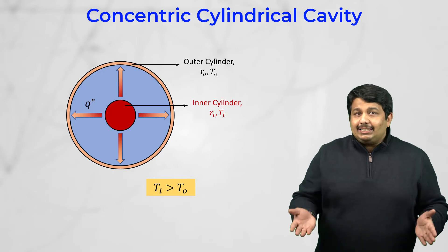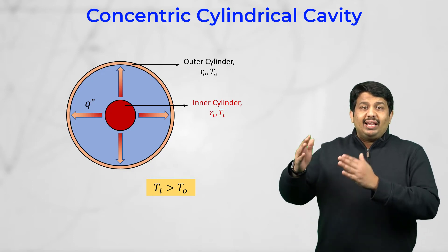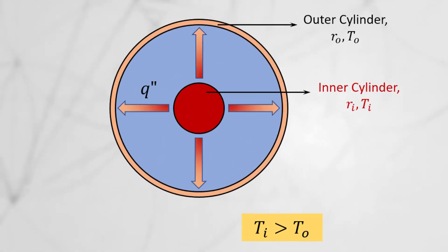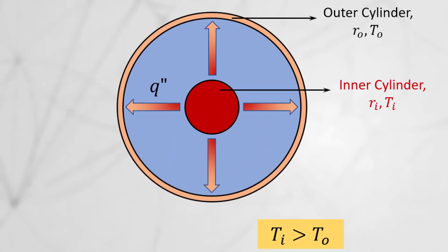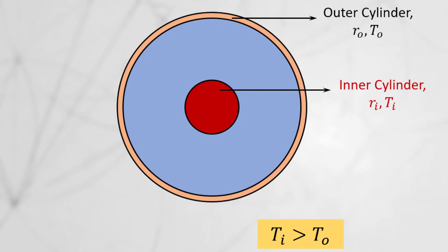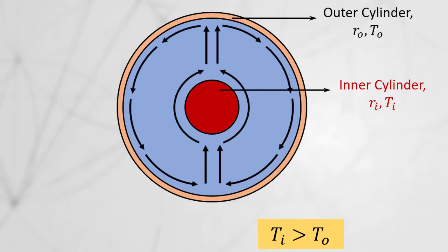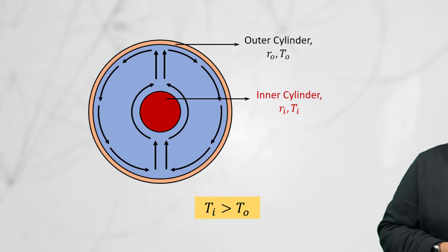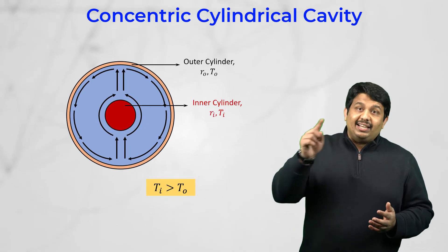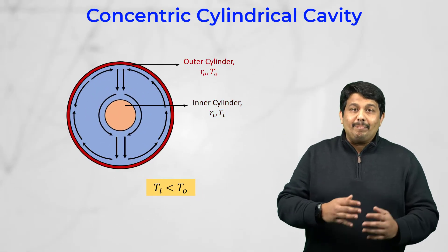The circulation of fluid in this space depends on whether the inner cylinder is hotter or colder compared to the outer cylinder. When the inner cylinder is hotter than the outer, that is Ti is greater than To, the fluid moves in the cavity such that it rises along the inner cylinder wall and falls along the outer cylinder wall, creating a recirculating region inside the annular space. This motion is reversed if the outer cylinder is hotter compared to the inner.